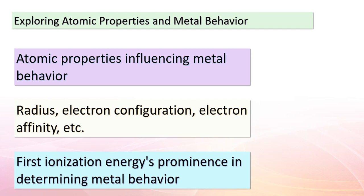Our journey has taken us through the fascinating world of metals and their behaviors. Among all atomic properties — the radius of an atom, its electron configuration, electron affinity — the first ionization energy stands out as the most important indicator of whether an element shines as a metal or takes on a different role as a non-metal. All the dynamic interactions happening at the atomic level involve both potential and kinetic energy, which shape the way elements engage with each other in the dance of chemical reactions.